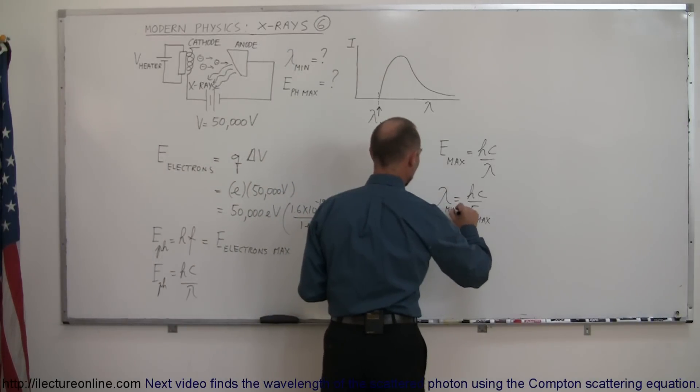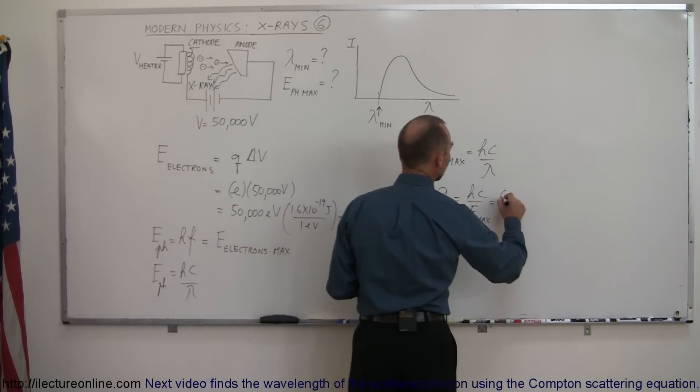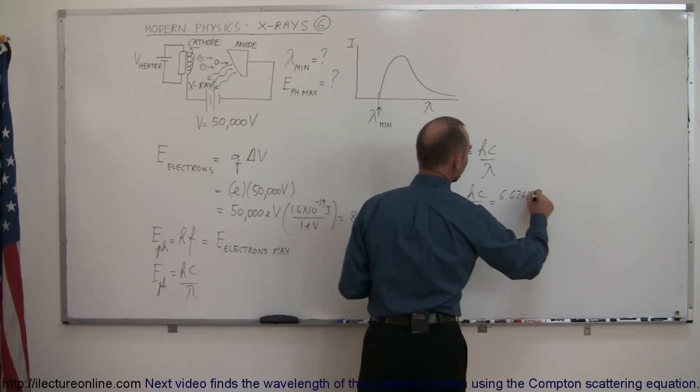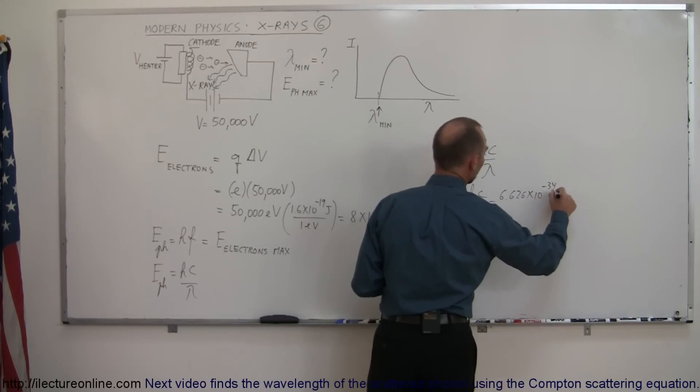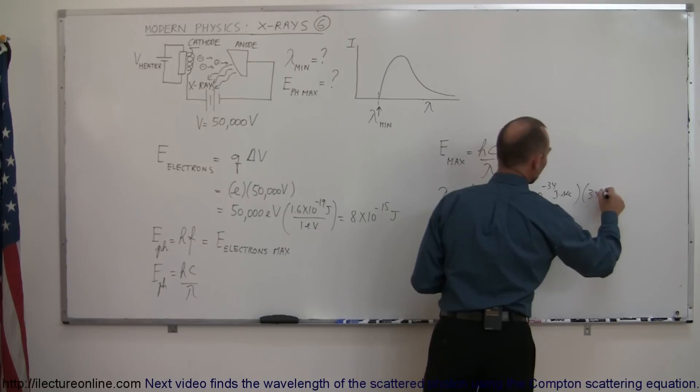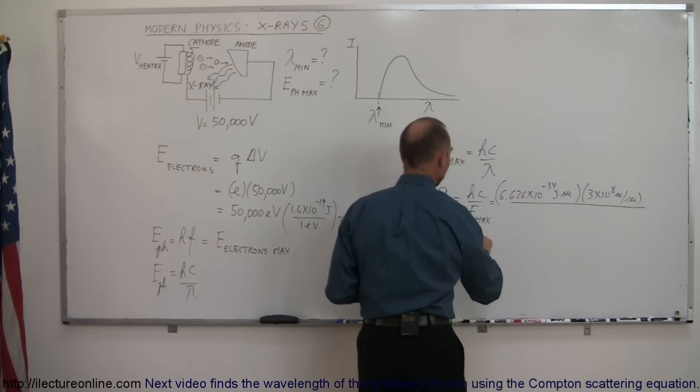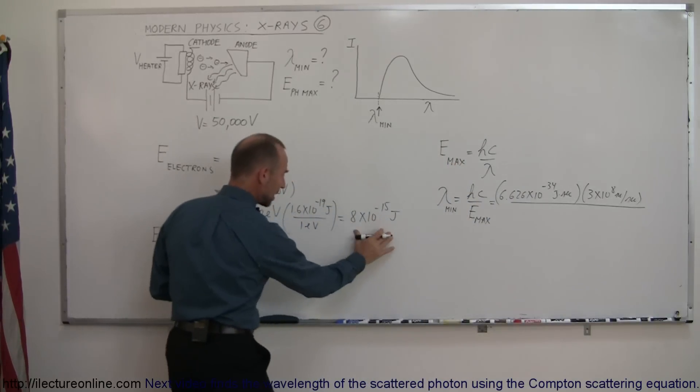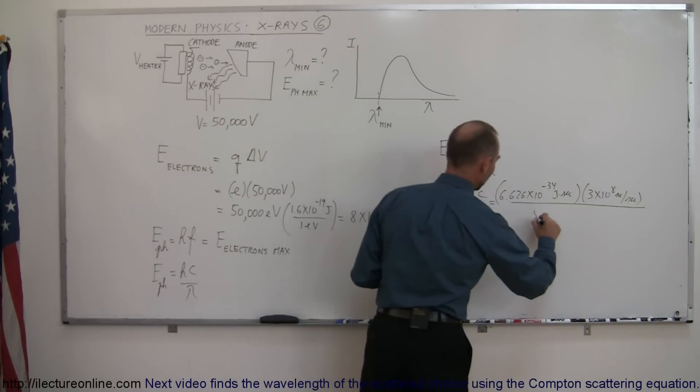And so that's equal to 6.626 times 10 to the minus 34 joules times seconds. Multiply times the speed of light. And the whole thing divided by the maximum energy which we found to be 8 times 10 to the minus 15 joules.